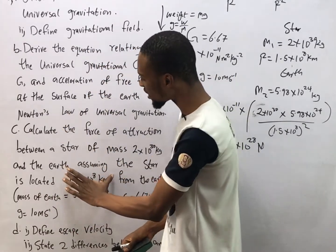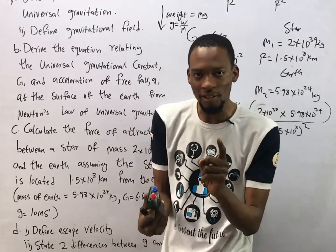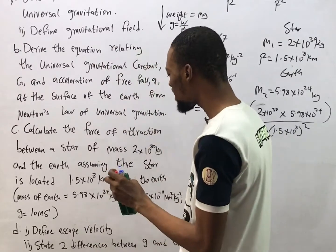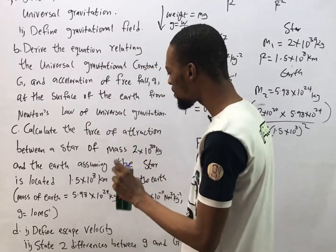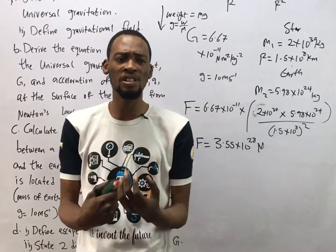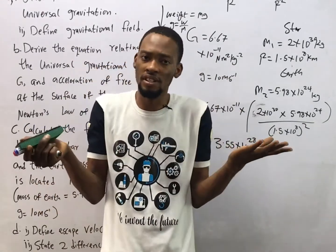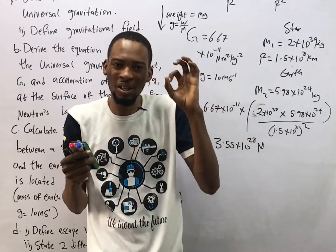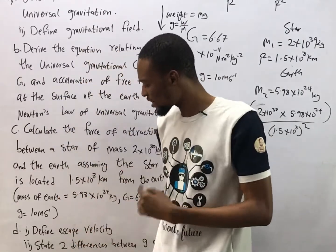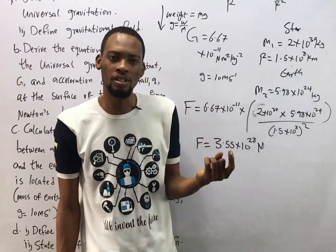The next question asks: define the term escape velocity. Escape velocity is simply the minimum velocity a body needs to leave the gravitational influence of a planet. The last question asks for the relationship between small g and big G.